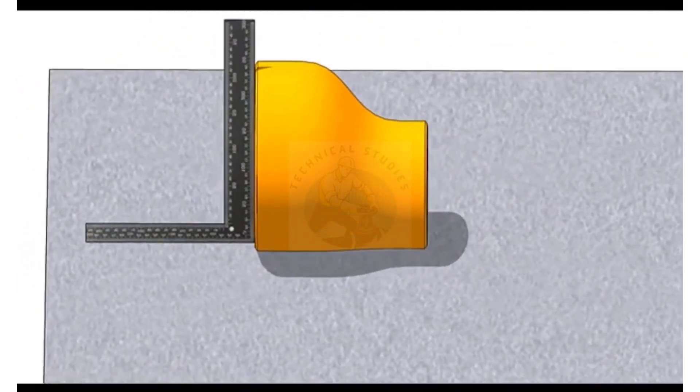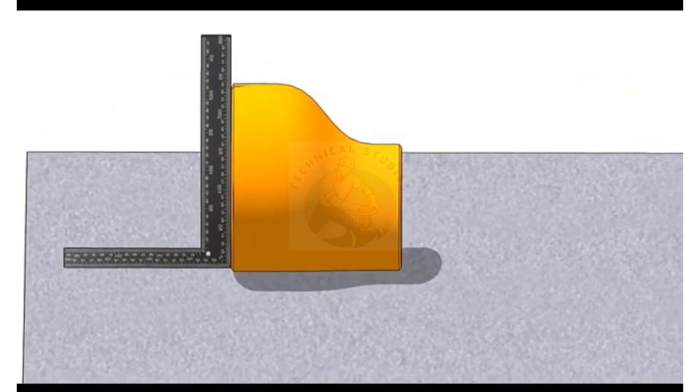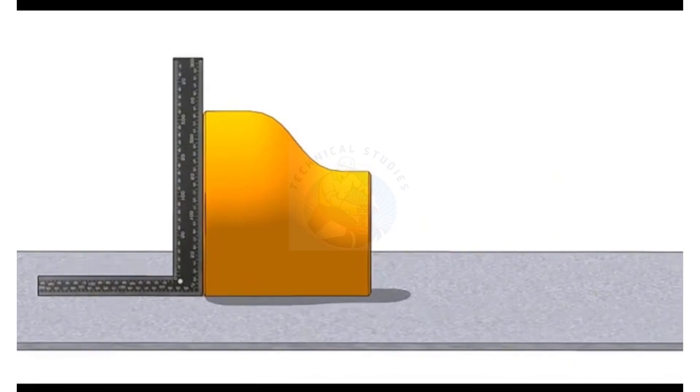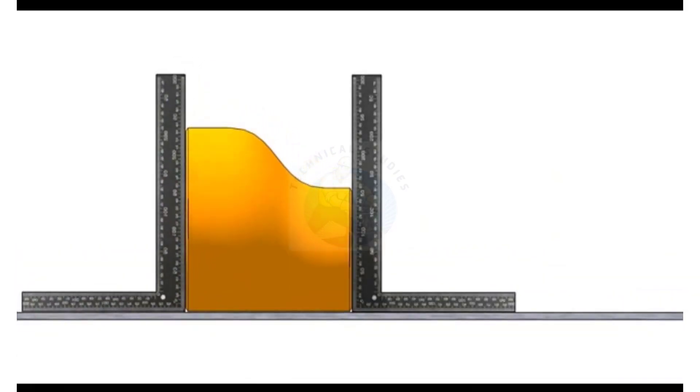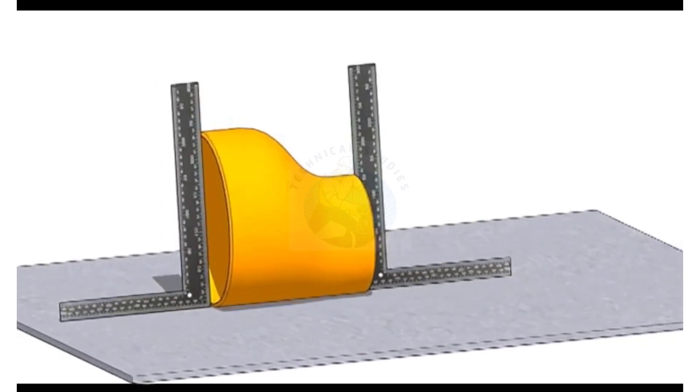Hold a right angle on the large side of the reducer as shown. Roll the reducer back and forth until the face touches the right angle properly. Now check the other end with another right angle. If the right angle touches the face properly, the reducer is almost okay.